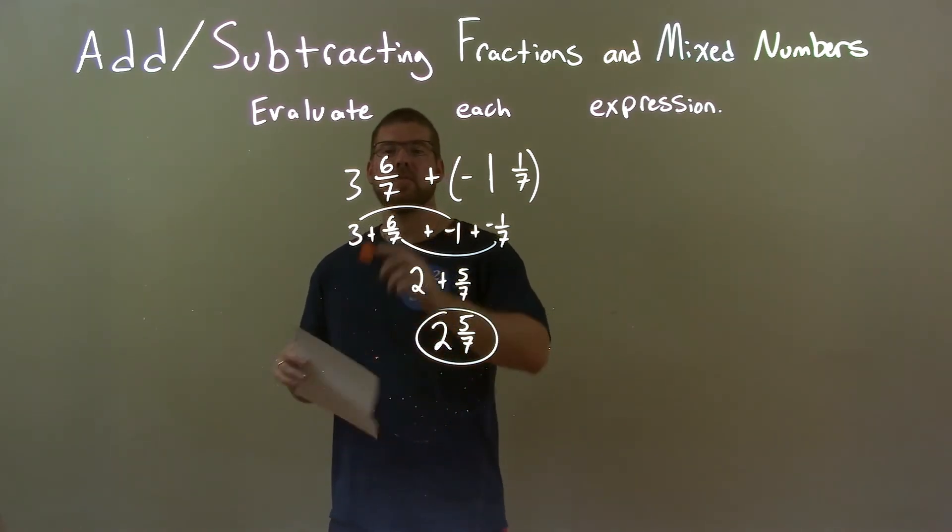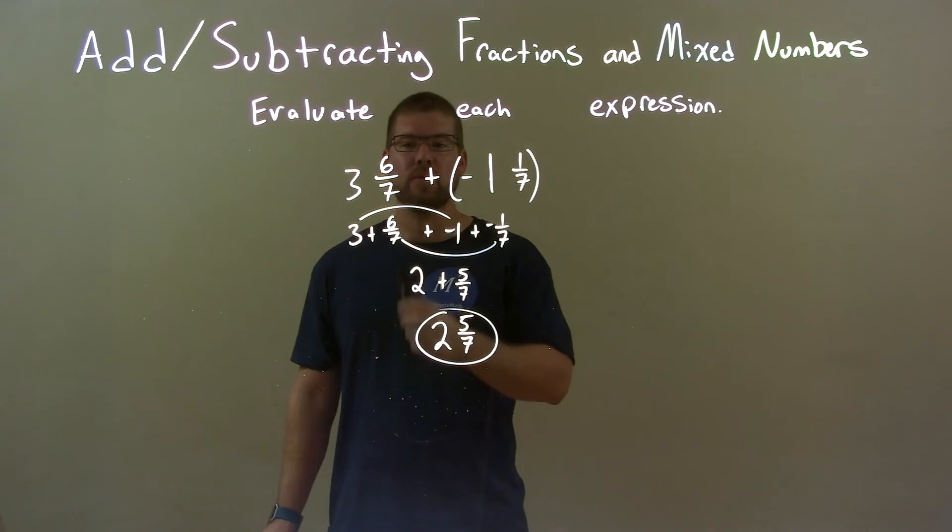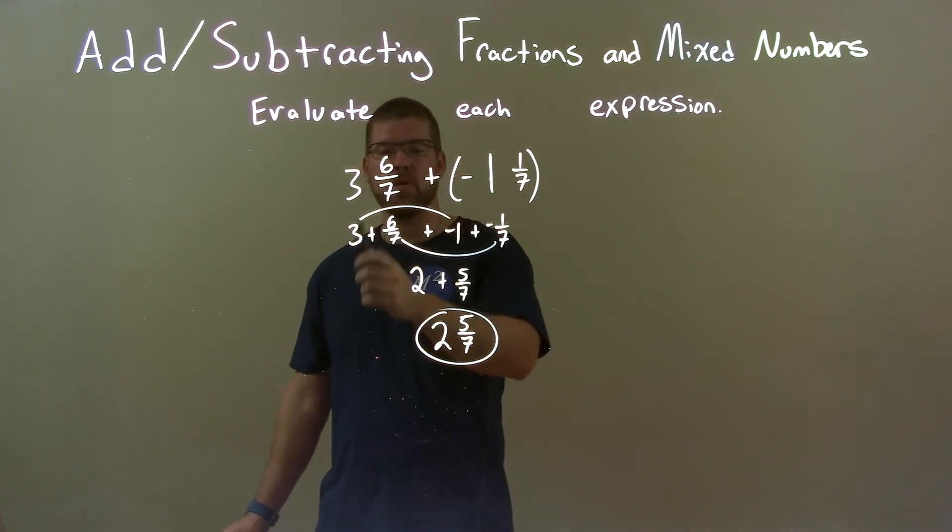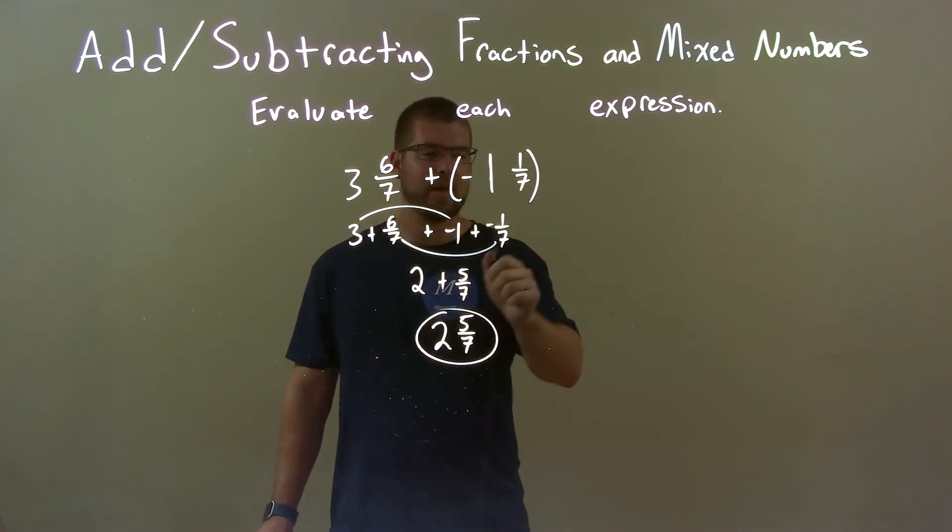Quick recap: We're given 3 and 6/7 plus negative 1 and 1/7. What I did was break down each mixed fraction to be a whole number and a proper fraction. And make sure you distribute that negative as well.